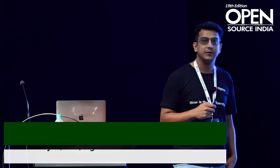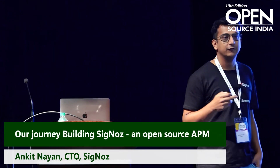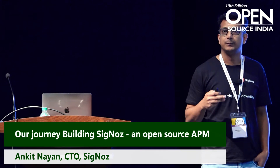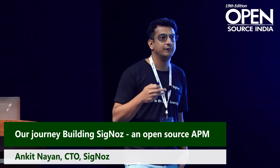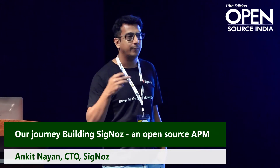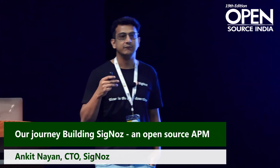What we're trying to build at Signos is an open-source observability platform. For those not very much aware about the domain of observability, think of it as an APM tool — application performance monitoring. Think of a big company that has a lot of backend microservices running, communicating with each other, the queues, the routes, and everything.